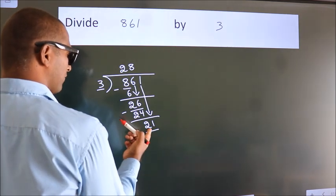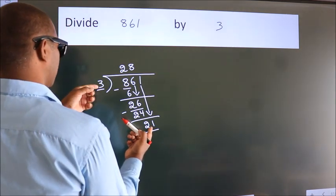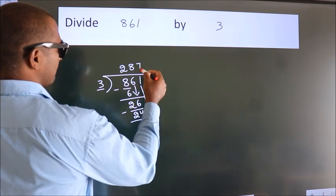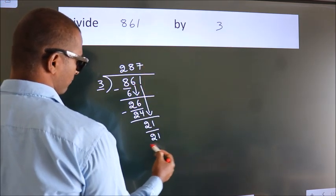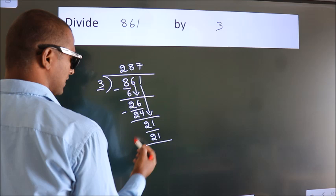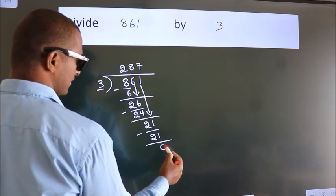When do we get 21 in the 3 table? 3 times 7 is 21. Now we subtract, we get 0.